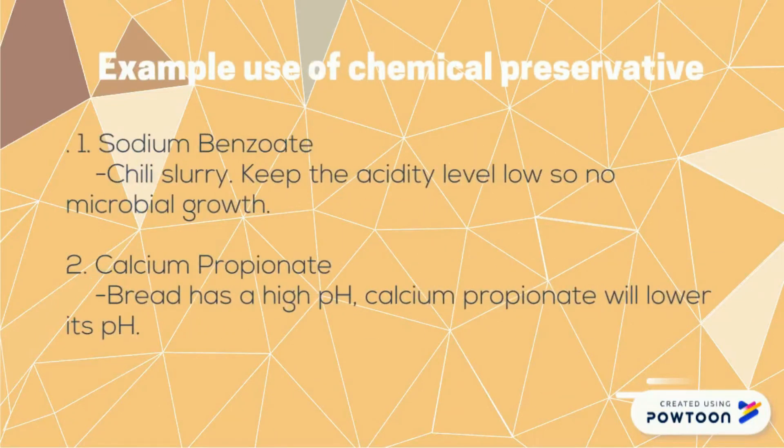Examples of chemical preservatives. First, sodium benzoate: jelly slowly keeps the acidity low so there is no microbial growth. Second, calcium propionate: bread has a high pH, and calcium propionate lowers its pH.